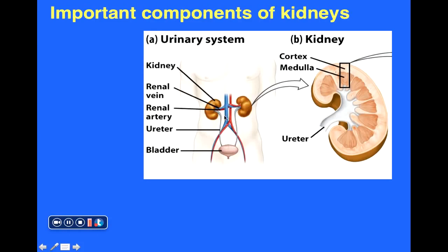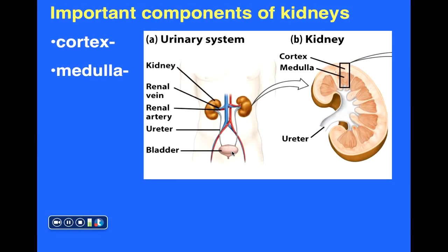Here we see an image with a couple of kidneys. Notice there's a large blood vessel entering each kidney — the renal artery — and a large blood vessel exiting each kidney — the renal vein. There's also a ureter, which carries urine formed in the kidneys down to the bladder where it is stored. If you slice a kidney in half, we can distinguish two general regions.